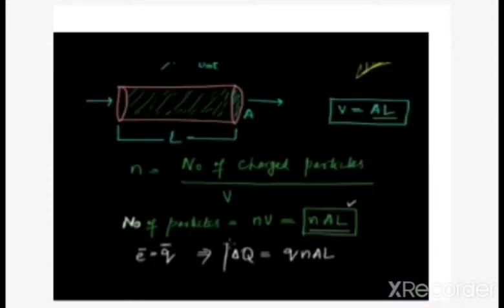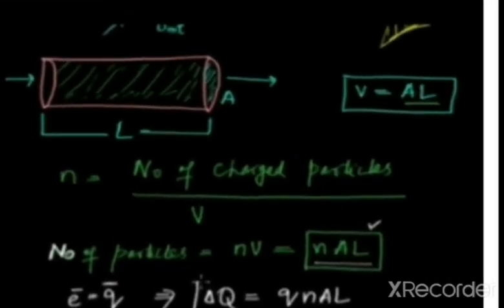Now, in second year, you will see a current-carrying conductor which is placed in a uniform magnetic field. We have to find out what is the value of force. Before reading this article, I told you that the force experienced by the conductor when placed in a magnetic field is equal to F = IL×B. We have to find out this expression.